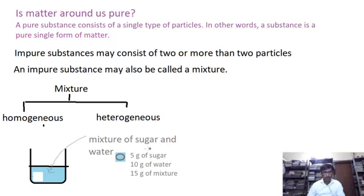Now, the ratio between the mass of sugar and mass of water in this case is 5 by 10, that is 1 by 2.